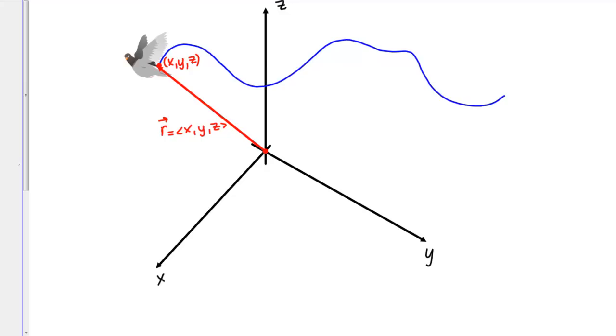So at any one moment in time, I can describe the pigeon's position with a position vector and that vector has its tail at the origin and its head at some point X, Y, Z as I've shown in the picture here. Here I've labeled this vector R and its components are X, Y, Z.